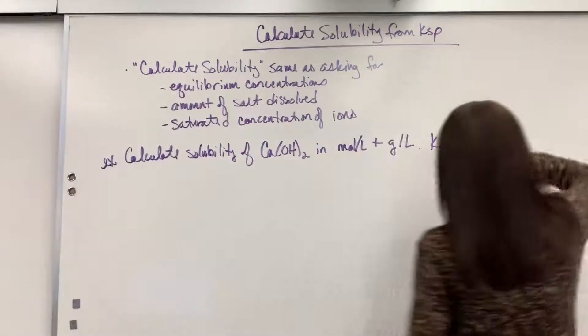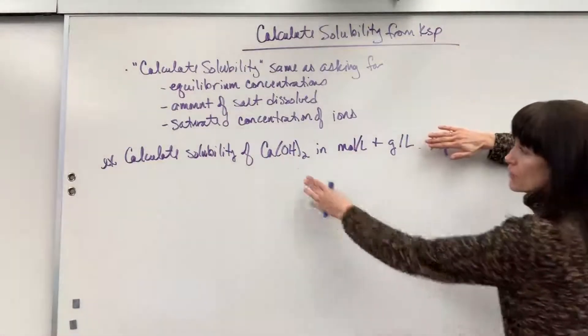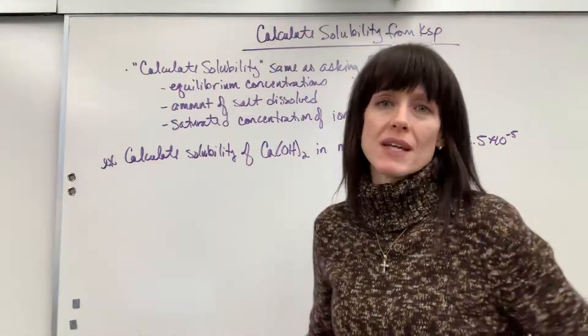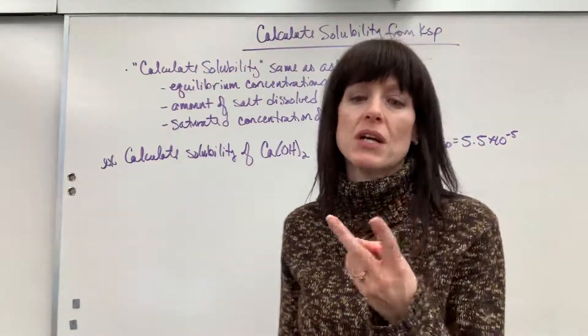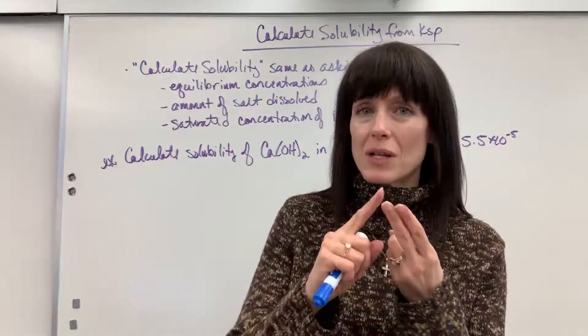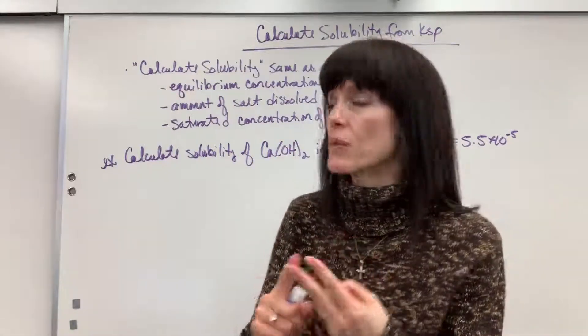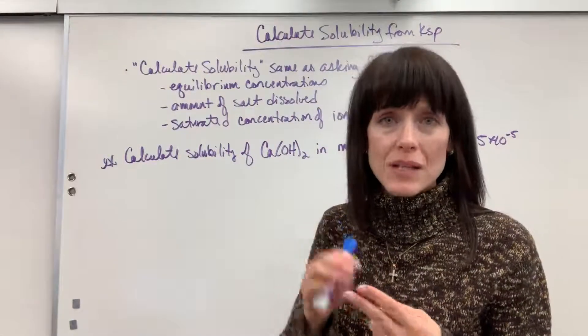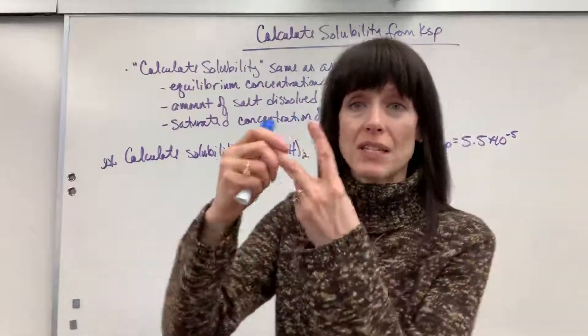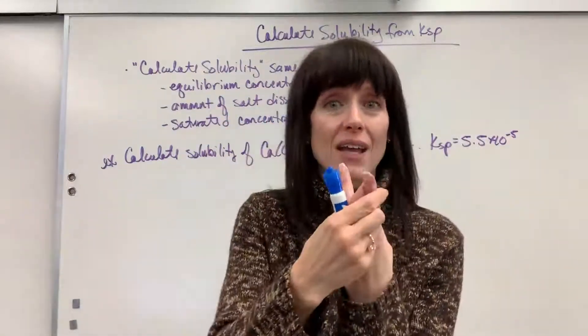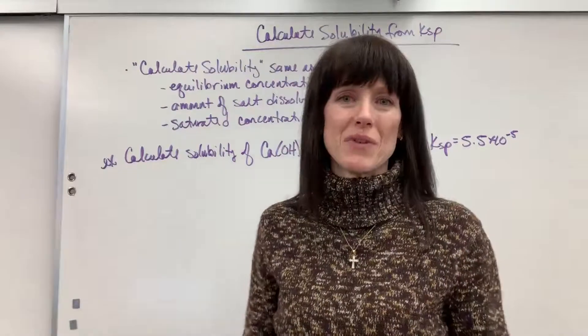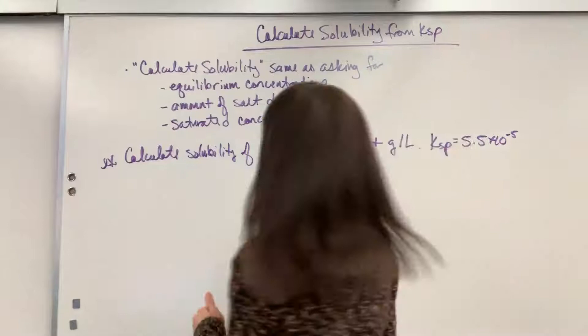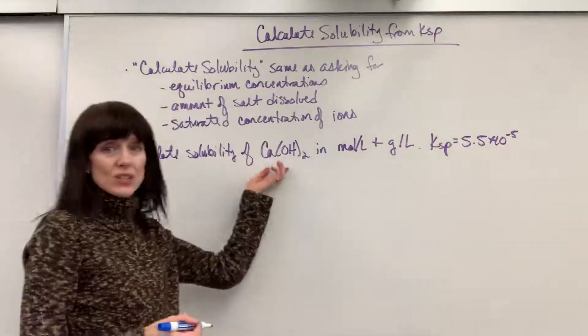Now it's possible that they wouldn't give you the Ksp. They'd say calculate solubility and you'd have to go to a solubility table and look that up. Remember when we're doing Ksp there are two pieces of information: there's the K value and the equilibrium concentrations. When they're asking for solubility, they're asking for E, which means if they're asking for E, we've got to have K. So go to a table and look it up if it's not given to you.